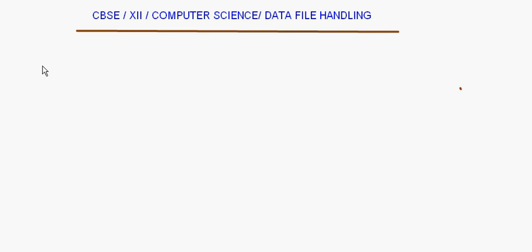Let's take up the topic of data file handling. First of all, let's understand what data file handling means. It basically means that you are going to store information into a data file. Till now we were using cout and cin statements, and if you wanted to enter the records of 50 students and store them in arrays, that array was not stored permanently. So next time when you want to see the same thing, it is not there — you will have to enter the information once again.